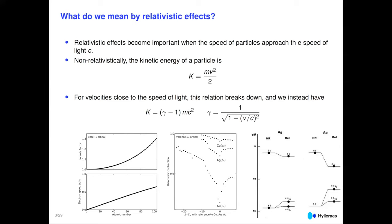The consequences are twofold. First, for electrons closest to the nuclei: because the mass of the electron can be considered to increase, they will contract — so the S and P orbitals will in general contract. You can see this when you look at the copper, silver, and gold series, where the contraction of the outermost S orbital is largest for gold.